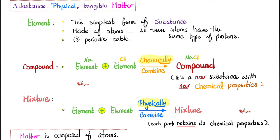Here's one oxygen atom, here's another — they are identical, the same type of atoms containing the same number of protons. How many protons does oxygen have? Look at the periodic table and let me know in the comments. The periodic table is the periodic table of elements: hydrogen, helium, lithium, beryllium, boron, and so on. When you combine two elements together chemically, you get a compound with new chemical properties. But if you combine them physically, you get a mixture which retains the old chemical properties — like oxygen and nitrogen in atmospheric air.